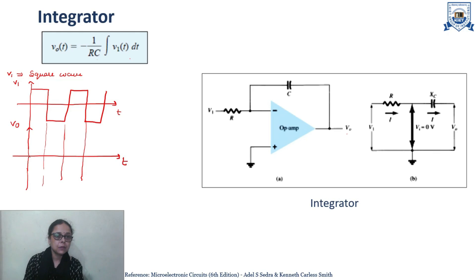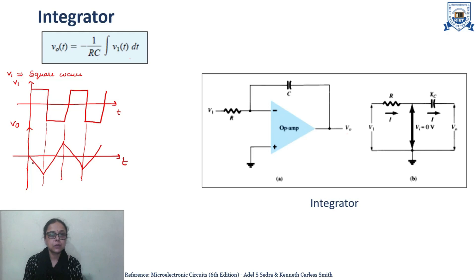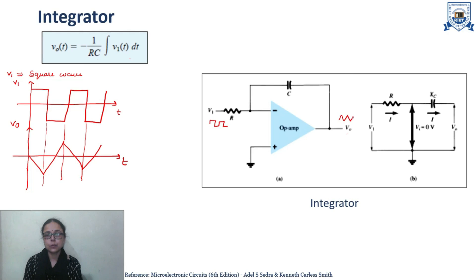The waveform will increase with time but in the negative direction, going like this. For a constant input we get a time-varying function with respect to time, and it is 180 degrees phase shifted with respect to the input because of the negative sign. So if we give a square wave at the input of this integrator, we will get a triangular waveform at the output.